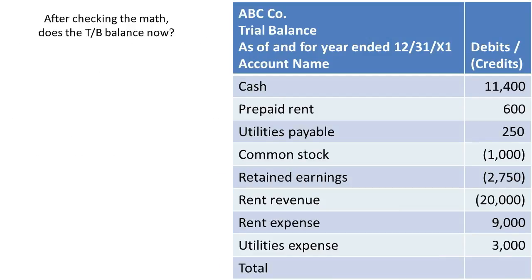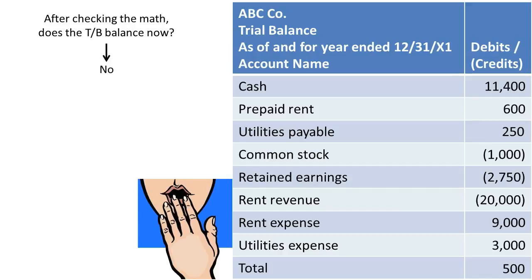Here's another example where I've changed some numbers to create an error. If you were to add these up, you would realize it adds up to having $500 more debits than credits. Therefore, the trial balance does not balance. How can we discover where the error is?